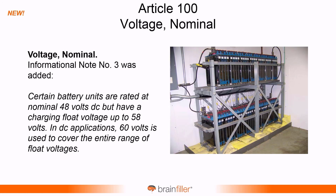For 'nominal voltage,' this change concerns DC voltage. Certain battery systems are rated 48 volts nominal but can have a float charge up to 58 volts. So in DC applications, 60 volts is used to cover the entire voltage range. A new informational note was added to address this.